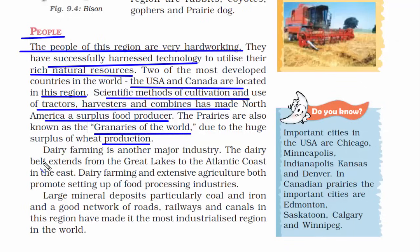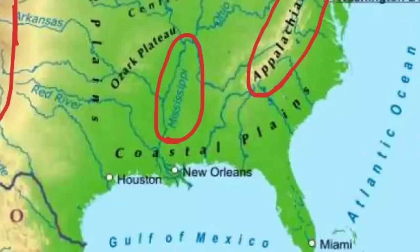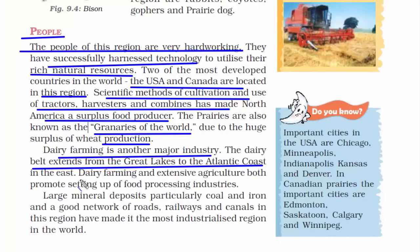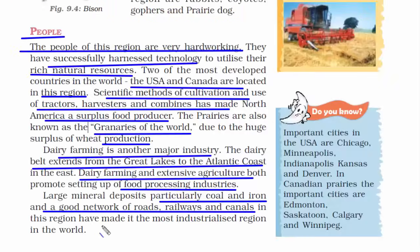Another major industry apart from agriculture is dairy farming. Dairy farming extends from the Great Lakes in the northeast to the Atlantic coast in the east. Since dairy farming is extensive here, they have a lot of food processing industries as well — you'll see they have tons of milk products. The central region also has large mineral deposits, particularly coal and iron, which are very crucial and important natural resources.